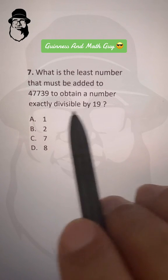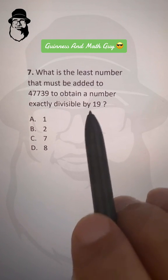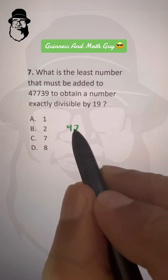What is the least number that must be added to 47739 to obtain a number exactly divisible by 19? Let's divide this by 19 the old way.